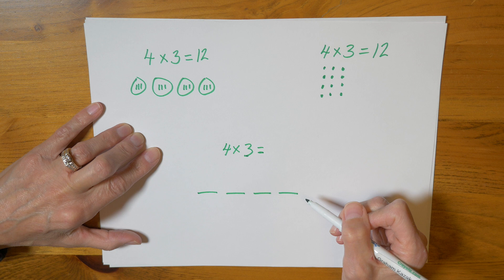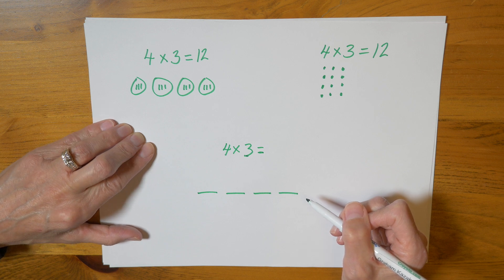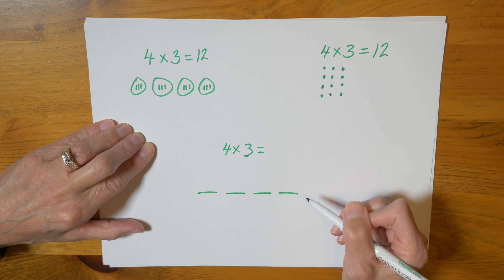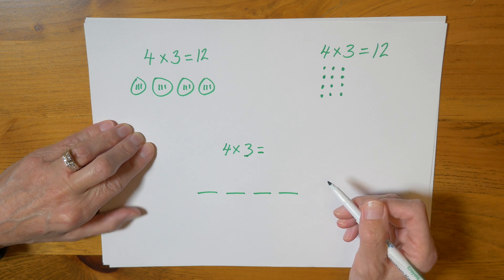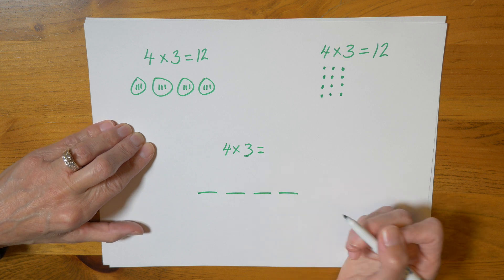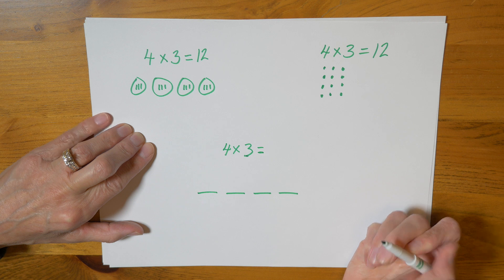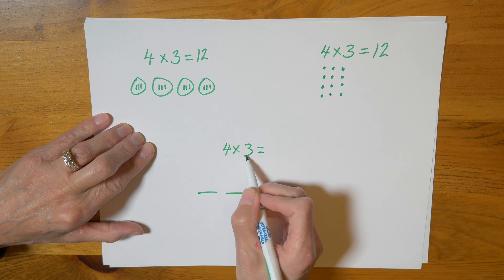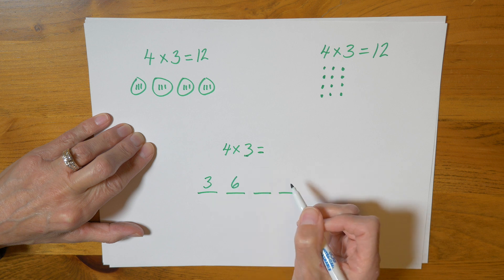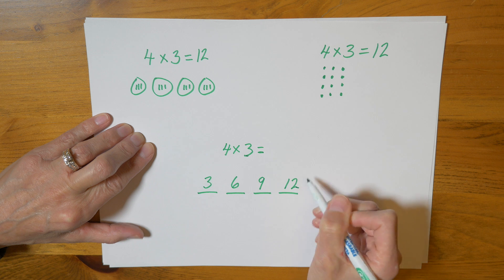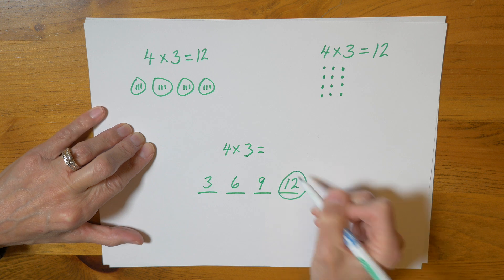Now in class I would have you use a hundreds chart to help you with this. So if you have it from before because I did send it in an attachment to your parents, take it out and use it for this and that will really help you or you can use a ruler. So to skip count I'm going to count by threes. Three, six, nine, twelve and this final number is my answer.